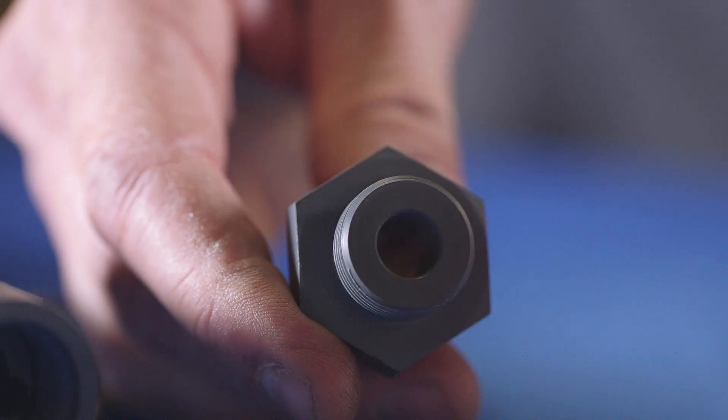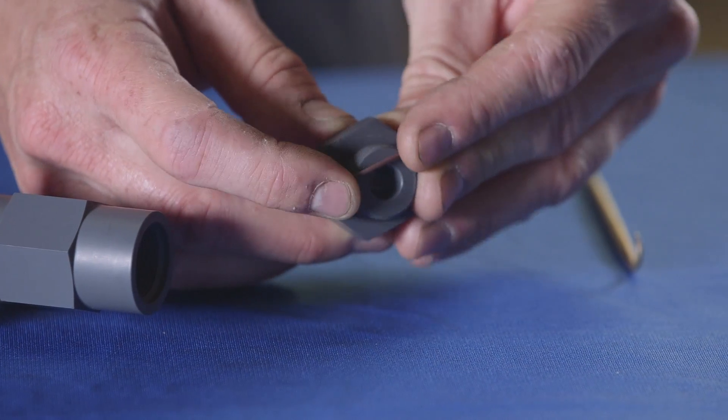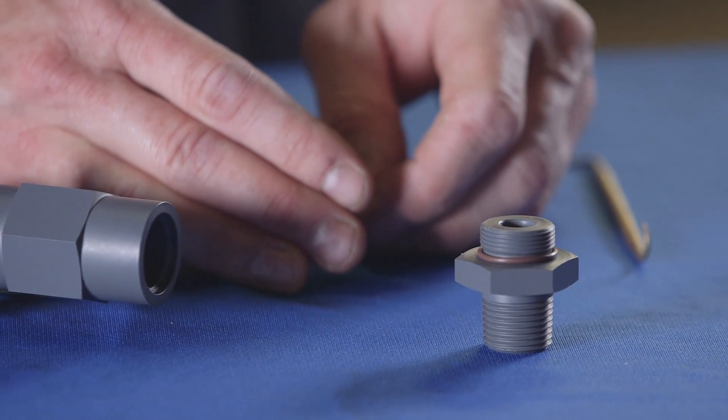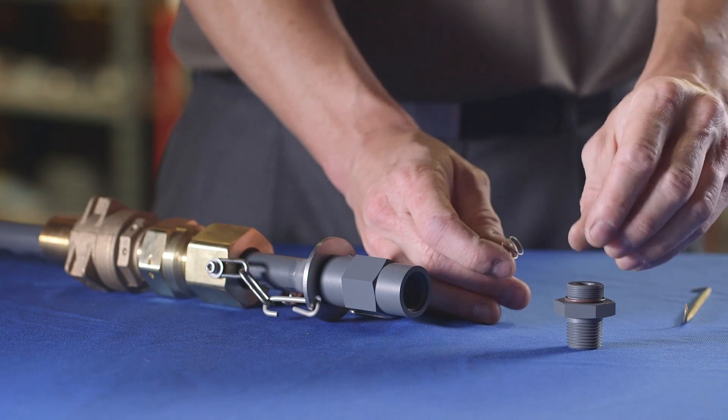Remove the O-rings and replace with the new ones supplied in the repair kit. Replace the spring and ball at this time if their condition has deteriorated.